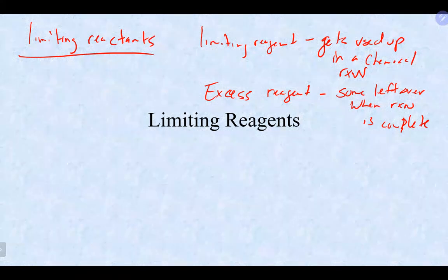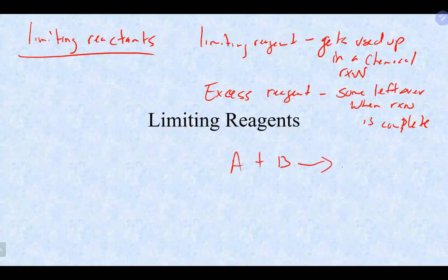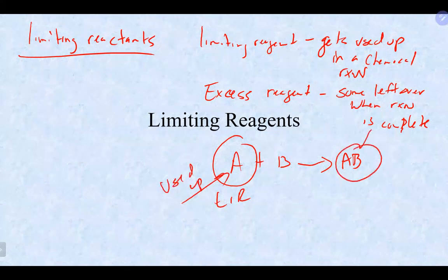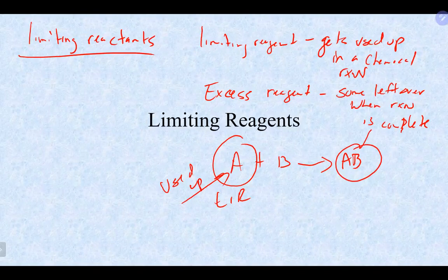For example, if you have A + B making AB, and A is the limiting reagent, once A gets used up there is absolutely no possibility of making any more product. You need both A and B to make the product, so as soon as the limiting reagent is used up, product production ceases. It is always the limiting reagent that determines how much product you can make.